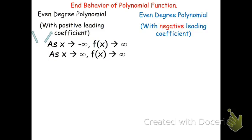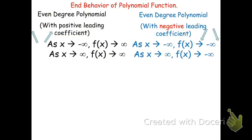Now if we have an even degree polynomial with a negative leading coefficient — like negative 2x squared, negative 3x to the fourth, or negative x to the sixth — they're both going to go in the same direction, but this time they're both going to go down. So as x approaches either positive or negative infinity, f of x will go to negative infinity.